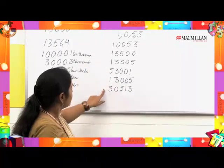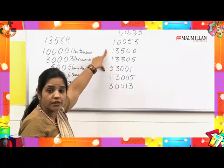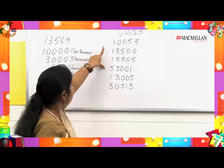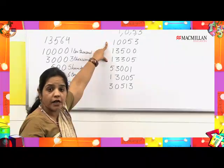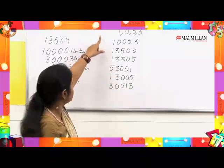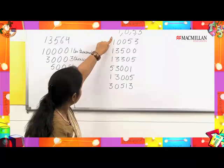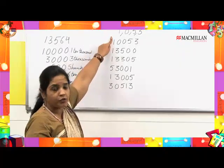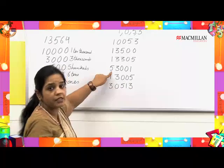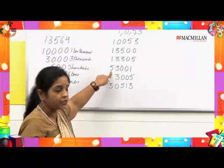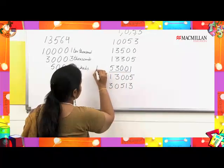In these numbers, can you tell me which is the largest and which is the smallest? How do we do that? When we want to find out the largest or smallest, we start our comparison from the ten-thousands position. Comparing the 10,000 position, I can very clearly see that 5 is the largest, so that number becomes the largest.